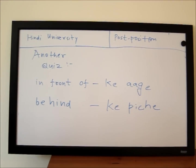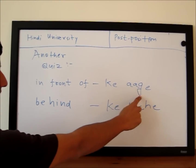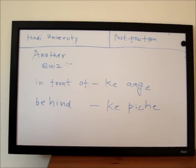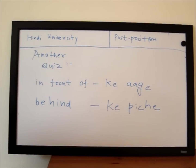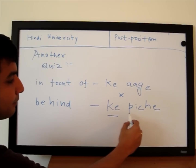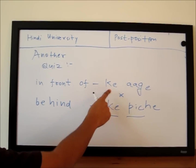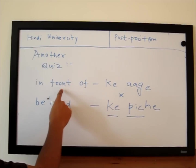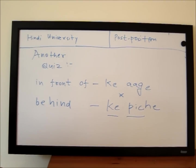This is another quiz I have for you. We just covered 'K aage,' which means 'in front of.' Similar to K aage, we have 'K piche,' which is the opposite — K aage is in front of, K piche is behind.